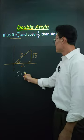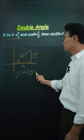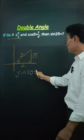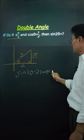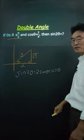Next, to find sine of 2 theta, we need to use the double angle formula, which is 2 sine of theta times cosine of theta.